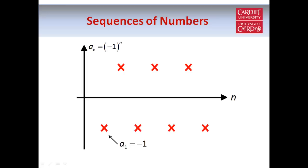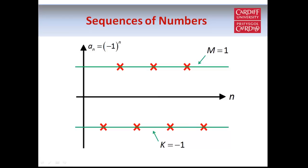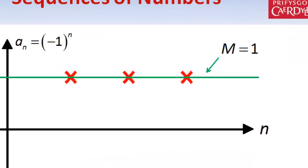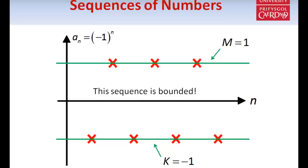The first term is minus 1, the second is 1, the third is minus 1, and so on. If we draw a green line below, all terms in the sequence are above or on that line, so the sequence is bounded below by minus 1. It's also bounded below by any number smaller than minus 1, such as minus 2, minus 3, etc. Similarly, drawing a line above shows all terms are below or on that line, so we can take m equals 1 as an upper bound. Any number greater than 1 is also an upper bound, so the sequence is bounded below and above — therefore it's bounded.